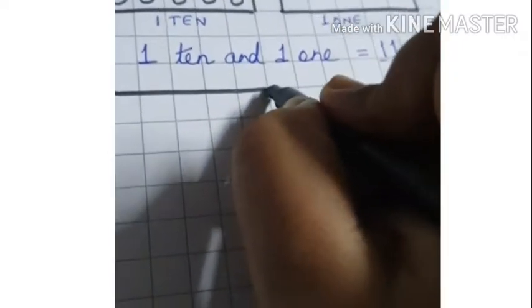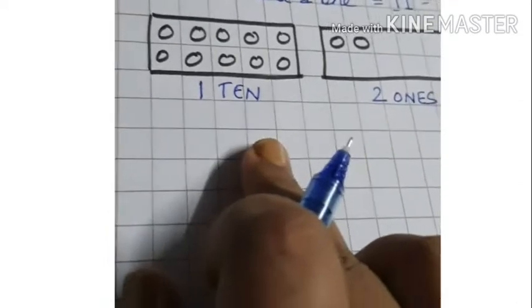Same manner, we have to make another box here. Two boxes. So this is 1 ten and 2 ones. 1 ten, 2 ones. So how do we form the number here?